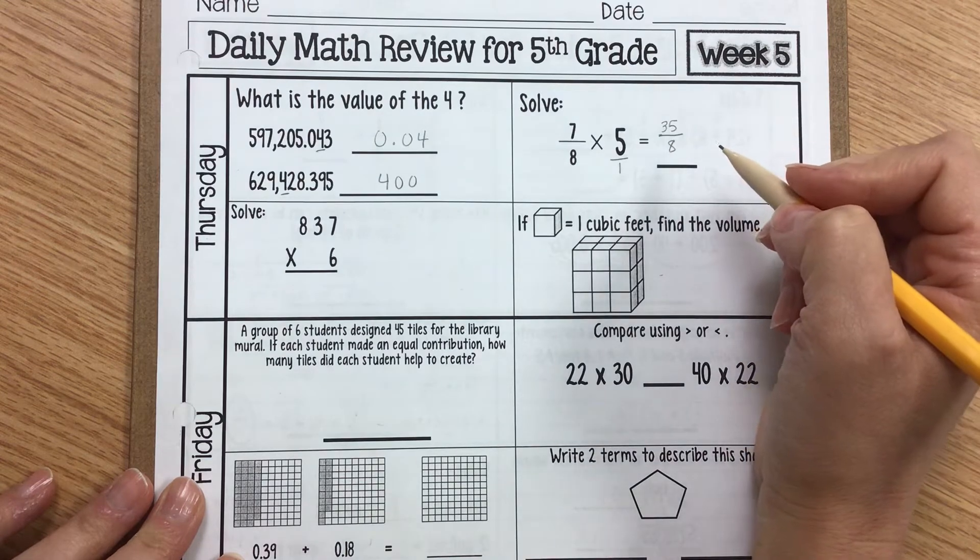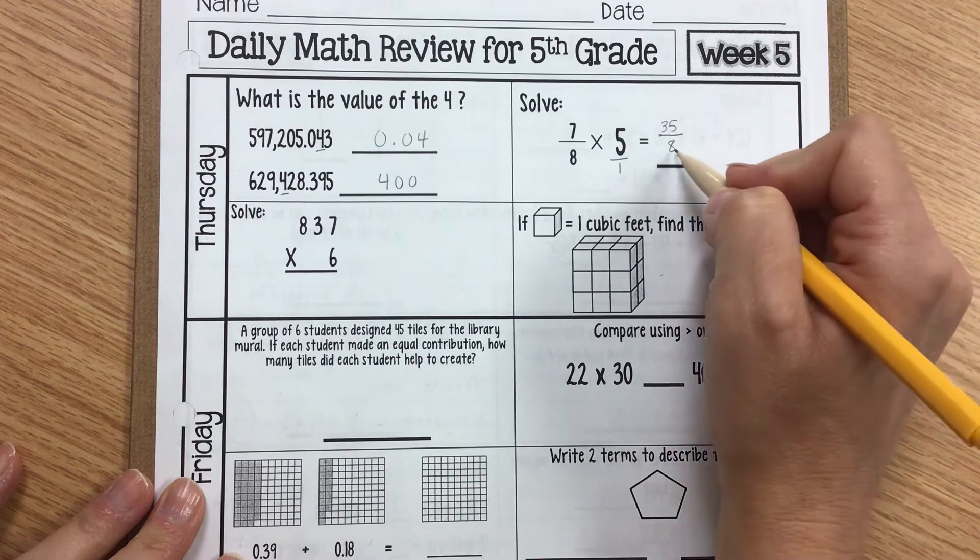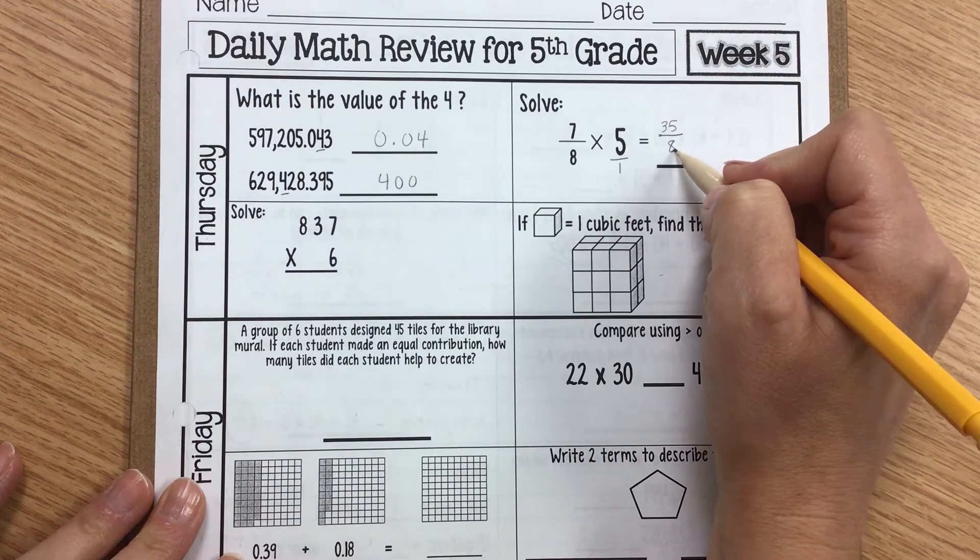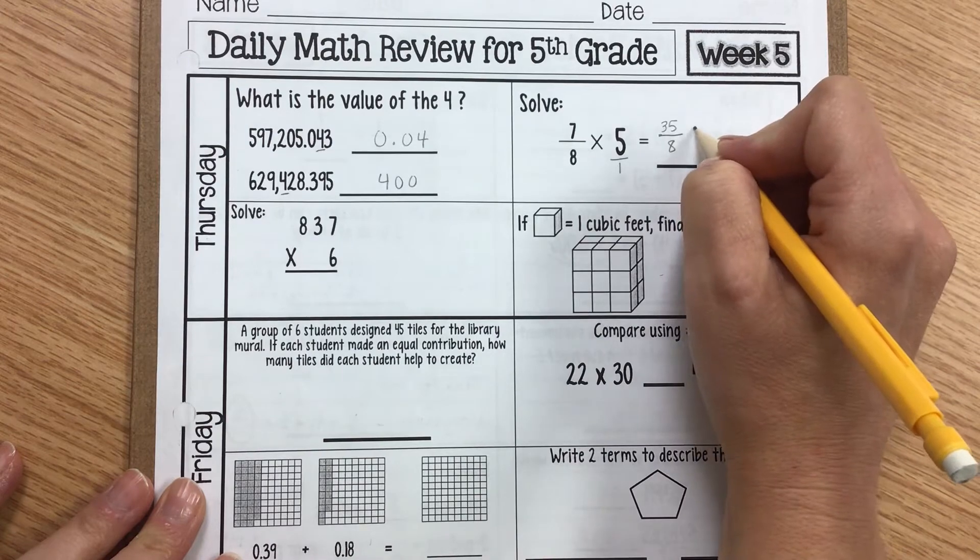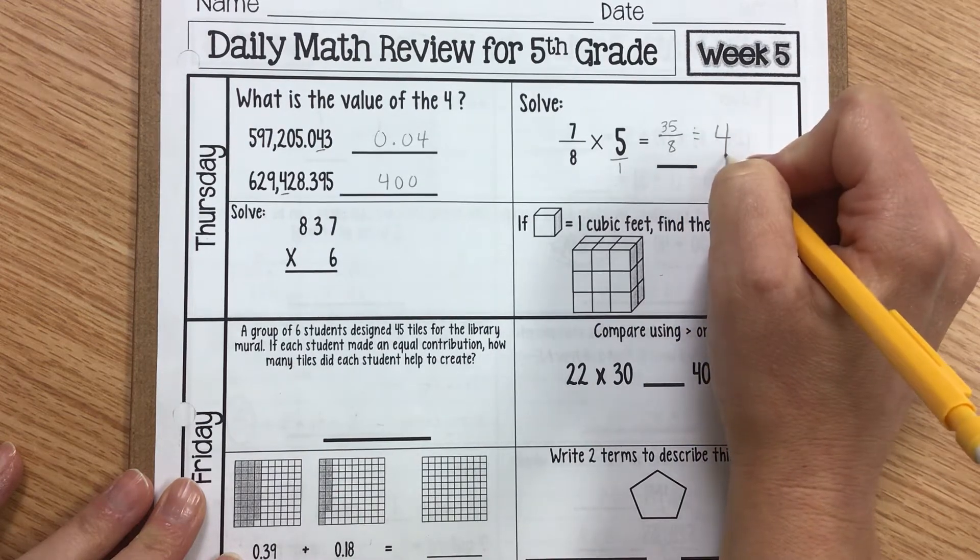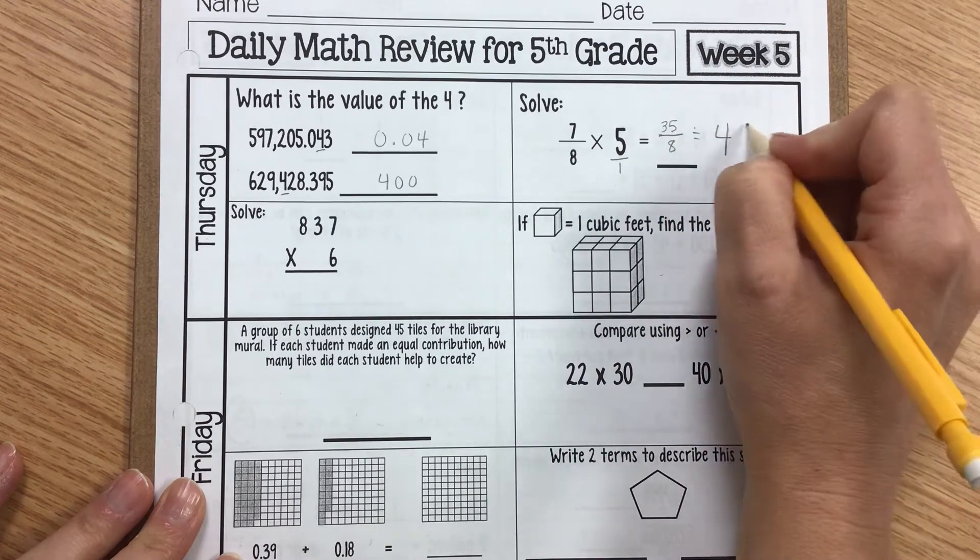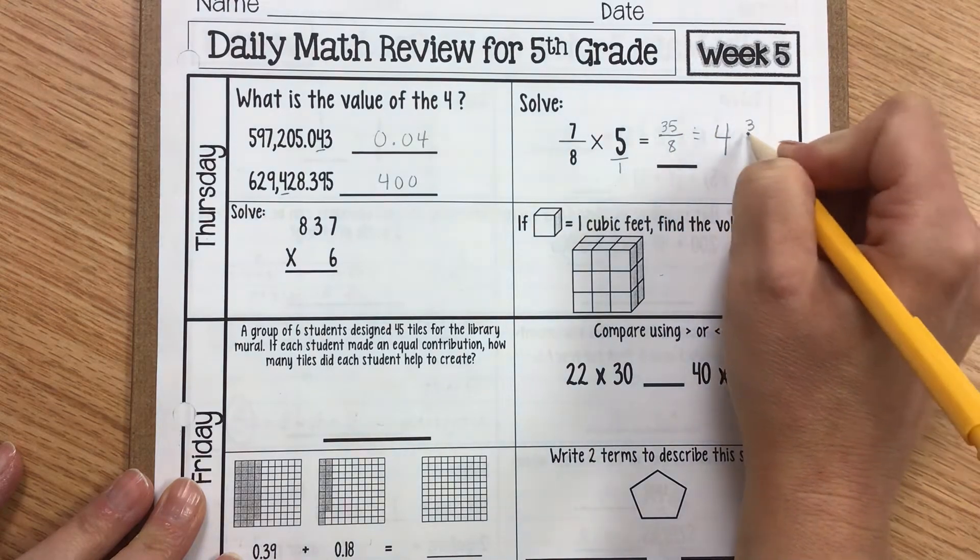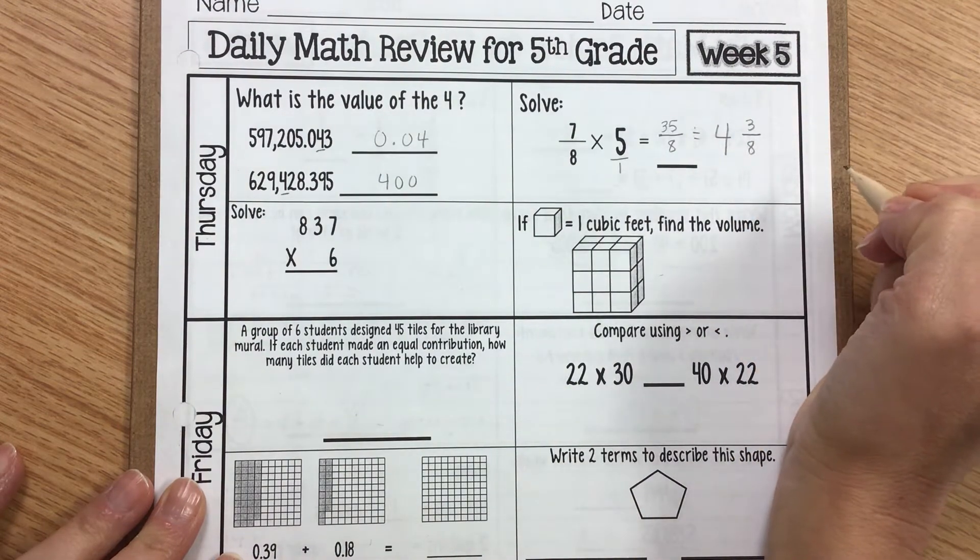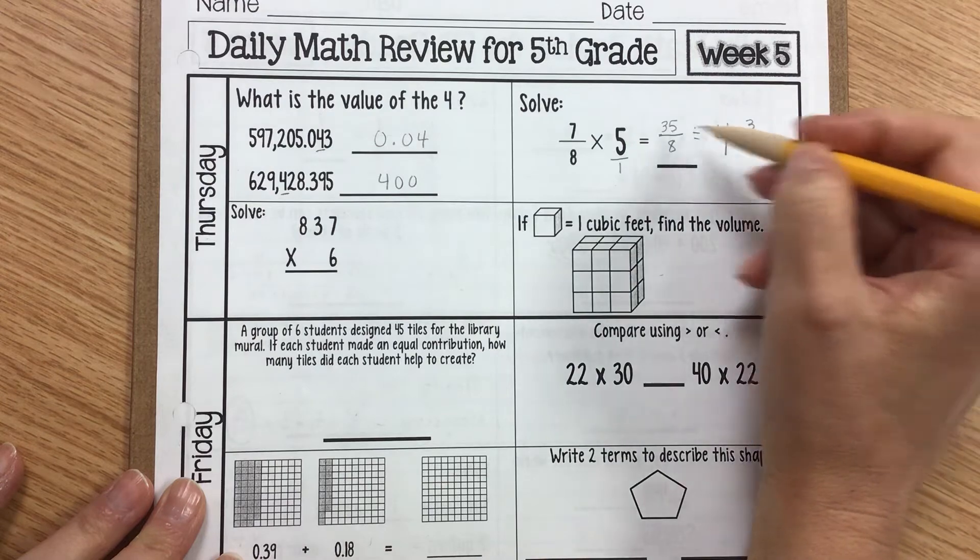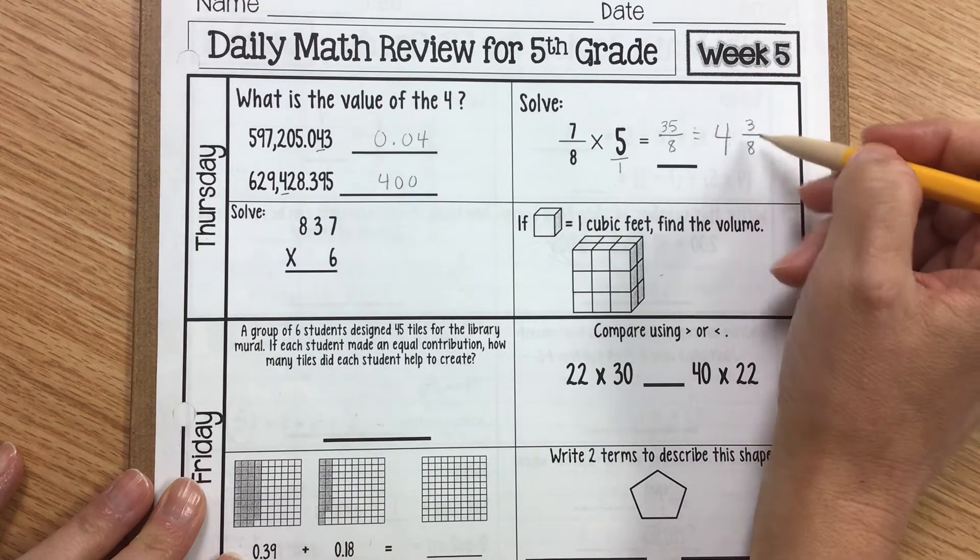Now you have what's called an improper fraction. To turn that into a proper fraction, we're going to ask ourselves, how many times can 8 go into 35? And it can go into 35 four times, because 8 times 4 is 32. So that would make us have 3 left over. We'll talk more about this in class later on. But 35/8 is the same thing as 4 and 3/8.